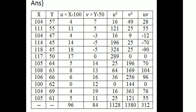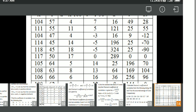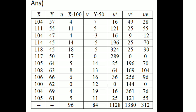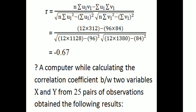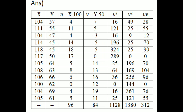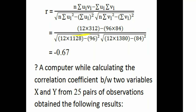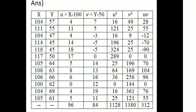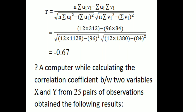We compute u-squared, v-squared, and uv columns. Summation of u-squared equals 1128, summation of v-squared equals 1380, and summation of uv equals 312. Also summation u equals 96 and summation v equals 84. With 12 observations, R equals 12 times 312 minus 96 times 84, all divided by the square root of [12 times 1128 minus 96-squared] times [12 times 1380 minus 84-squared].